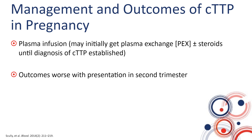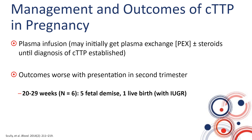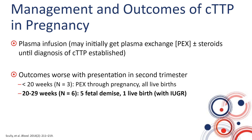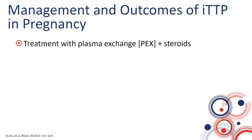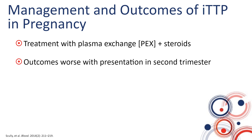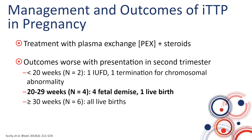Outcomes of congenital TTP are much worse when presenting in the second trimester between weeks 20 to 29. In a British series of six patients presenting between 20 to 29 weeks, there was only one live birth, and that baby had intrauterine growth retardation — the other five pregnancies unfortunately did not survive. In contrast, when congenital TTP presents before 20 weeks, all three pregnancies resulted in live births; similarly, at greater than 30 weeks, all 11 pregnancies resulted in live births. For immune or acquired TTP in pregnancy, standard of care is plasma exchange and immunosuppression with corticosteroids, with similarly worse outcomes when presenting between weeks 20 to 29.